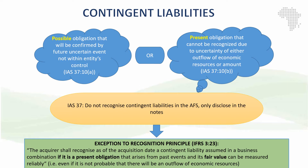Now IFRS 3 brings in an exception to that recognition principle. If the subsidiary has a contingent liability that is a present obligation — in other words, the second type of a contingent liability — then we need to recognize it as part of the business combination at its fair value.